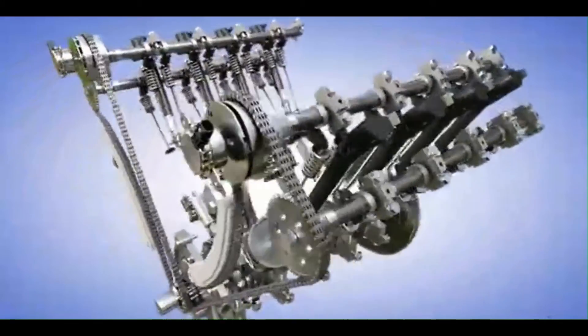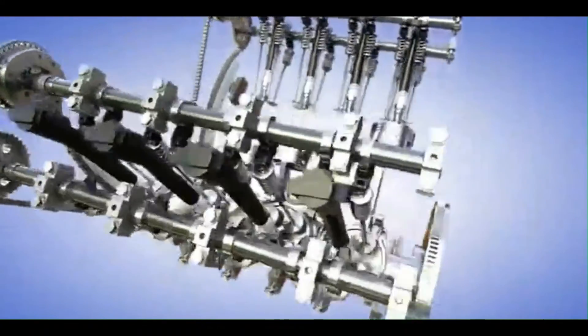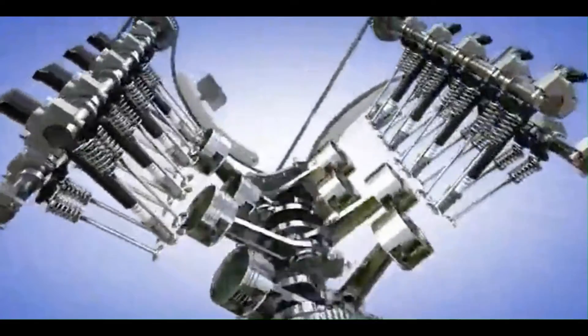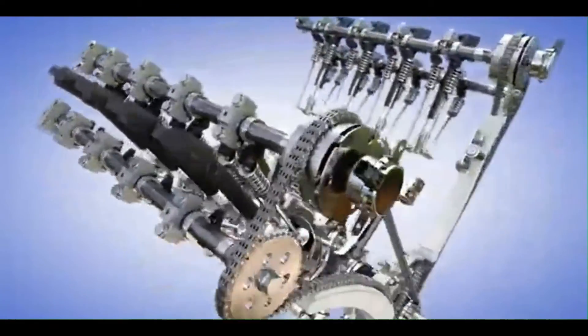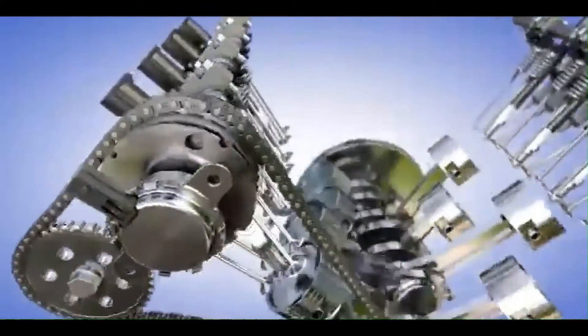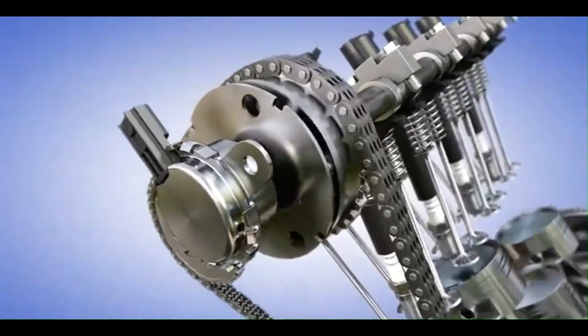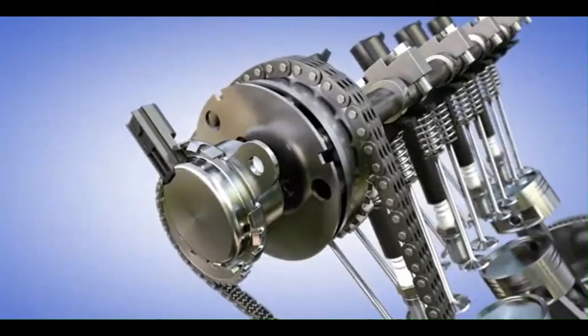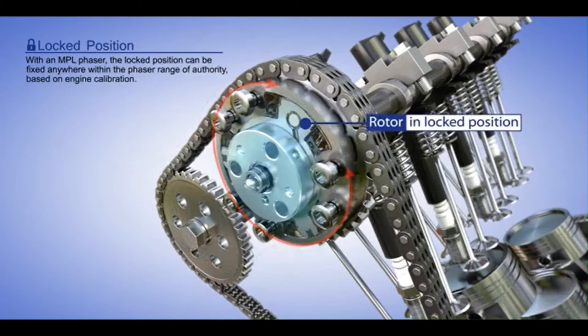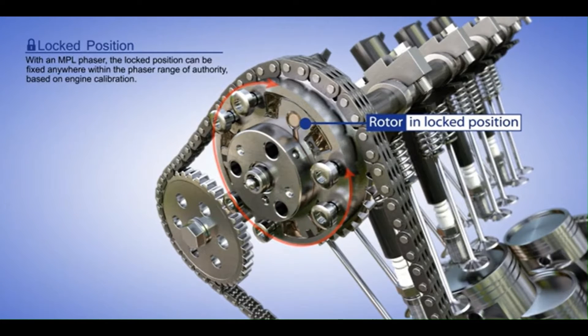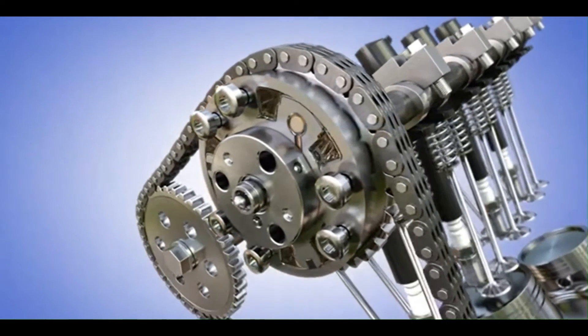1. Frictional Losses. The camshaft, which opens and closes the valves, is driven by the crankshaft. The rotation of the camshaft and the movement of related components, rocker arms, valve springs, produce friction. This friction leads to energy losses, though they are relatively small compared to total engine losses. These friction losses are typically part of what's known as mechanical efficiency losses and can amount to around 2-5% of the engine's total power output.